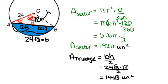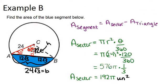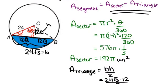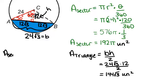So, now since I know the area of the whole sector and the area of the triangle, I can subtract those in order to figure out the area of the segment. So, the area of the segment will be the area of the sector, which was 192 pi, minus the area of the triangle, 144 root 3. And that will give me my area of segment.